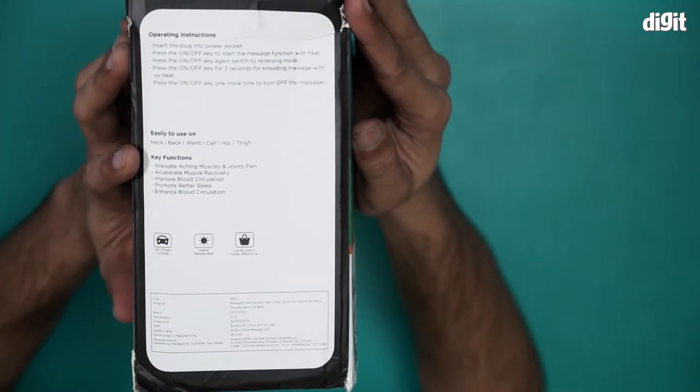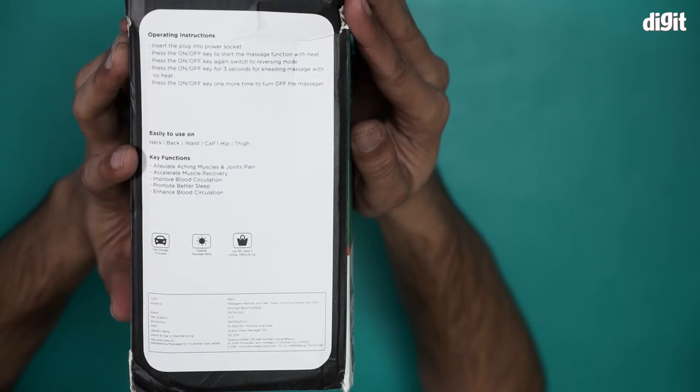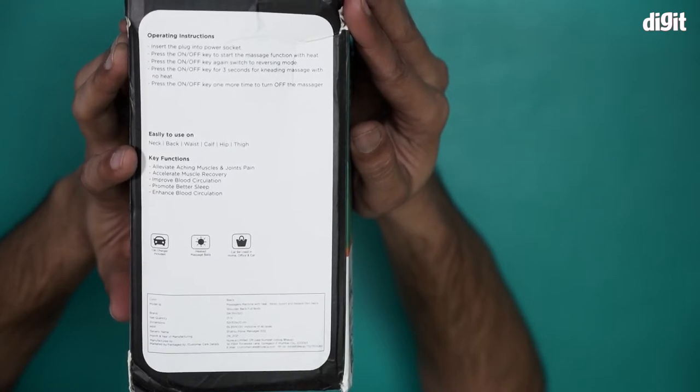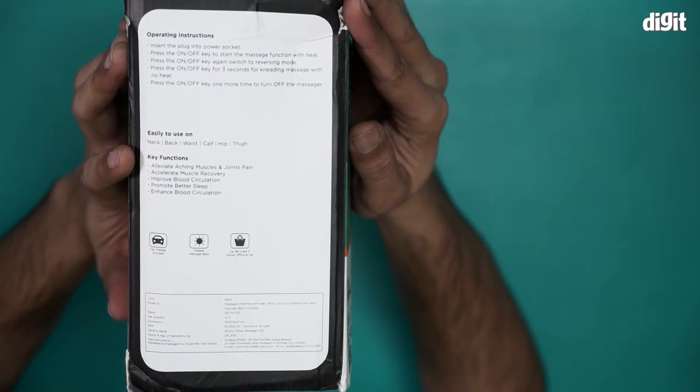Press the on-off key to start the massage function with heat. Press on-off key again to switch to reversing mode. On-off key for three seconds for kneading massage with no heat, and on-off key one more time to turn off the massager.